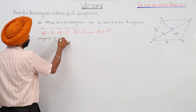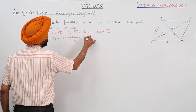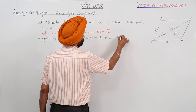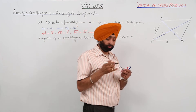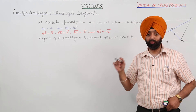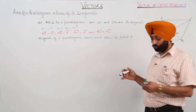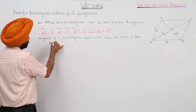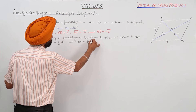Diagonals of a parallelogram bisect each other at point O. From geometry, if the diagonals of a quadrilateral bisect each other, then it is a parallelogram. Since the diagonals bisect at O, AO is equal to half of D1 and BO is equal to half of D2.